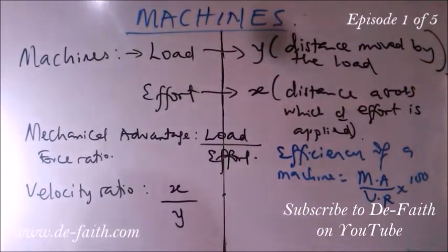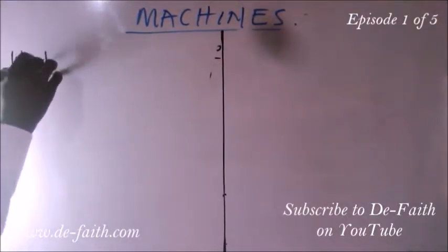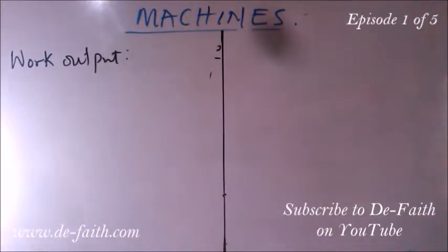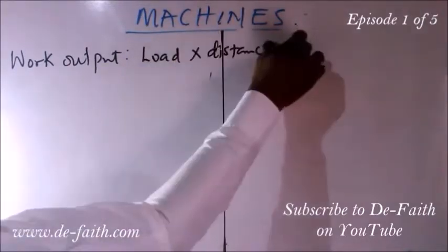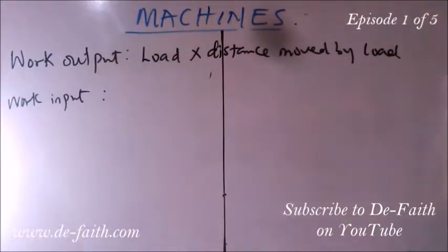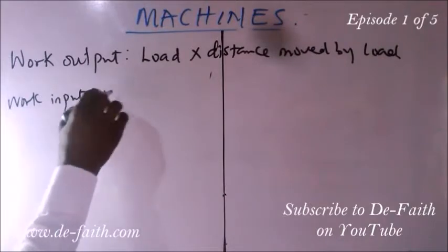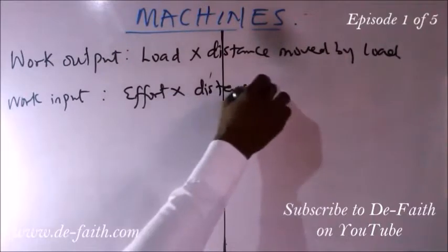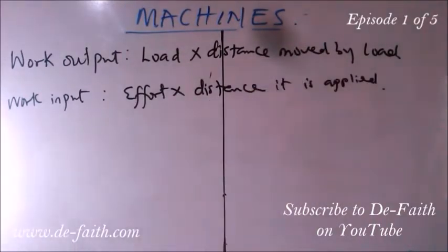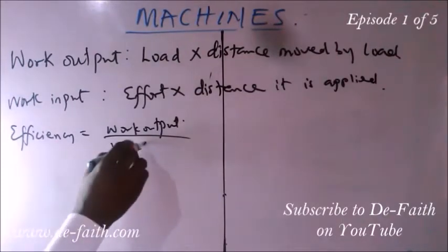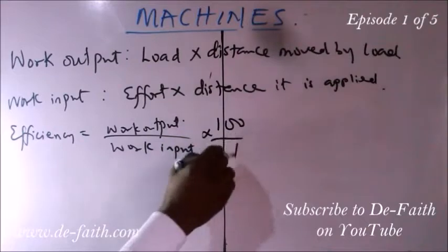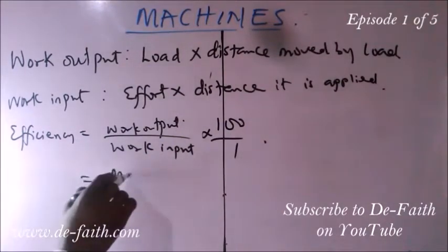When we carry out work, the work output is the load multiplied by the distance moved by the load. The work input is the effort multiplied by the distance across which it is applied. We can also use this to derive the efficiency of the machine: efficiency equals work output over work input, multiplied by 100. So we can get efficiency using this formula, or we can use mechanical advantage over velocity ratio times 100.